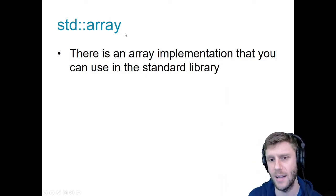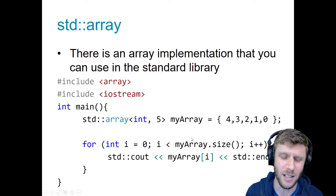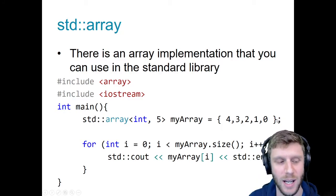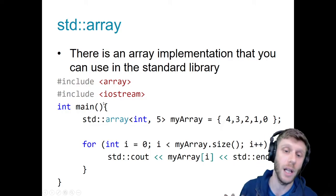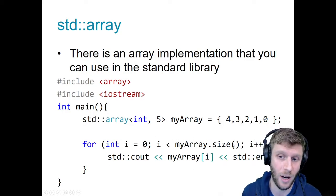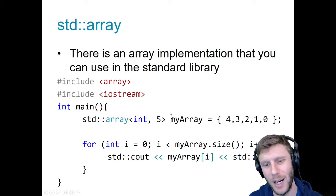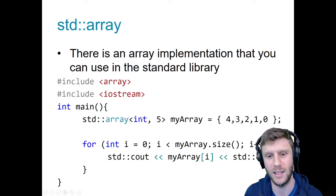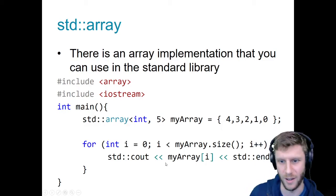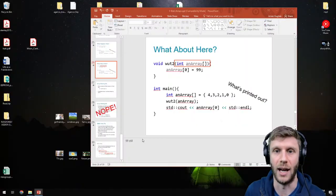There is also, from the standard library, an array implementation you can use. You can use this if you want in this course — I'm not going to make you use the regular old arrays if you don't want to. But we are going to be using regular arrays for more sophisticated stuff later. The standard library's array has a little more fancy stuff in it. For example, you can ask the array how big it is. The syntax is std::array<int, 5>, declaring both the type and size in angle brackets. I don't really use this, but it's available.